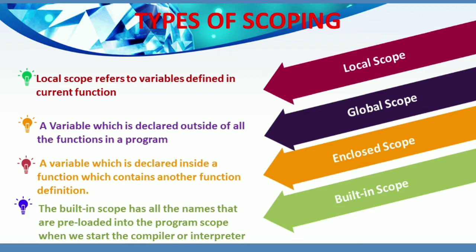There are four types of variable scope. Let me discuss them one by one. The first one is local scope — a variable which is defined inside a class or a function, that means a variable defined in the current function. The next one is global scope — a variable which is defined at the uppermost level, that means a variable which is declared outside of all the functions in a program.